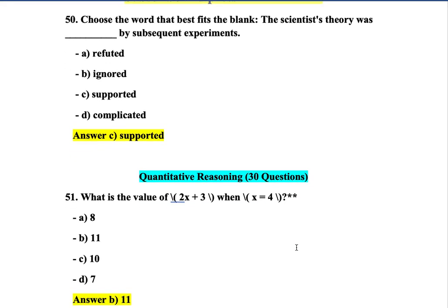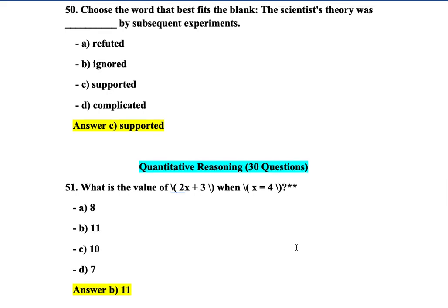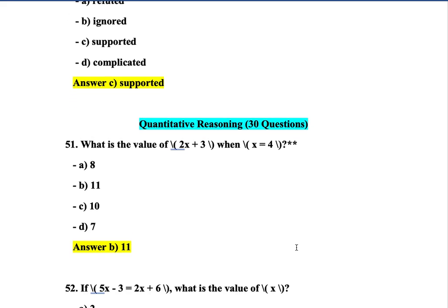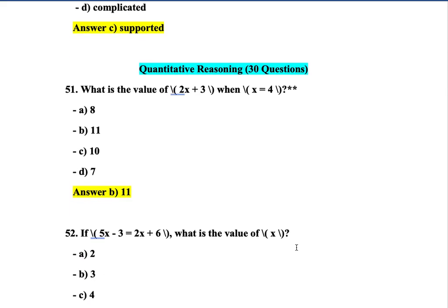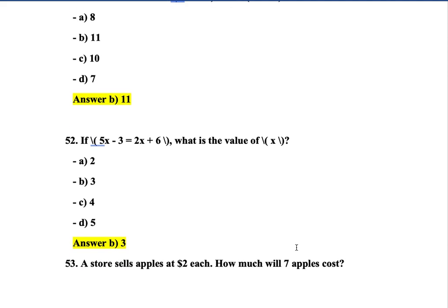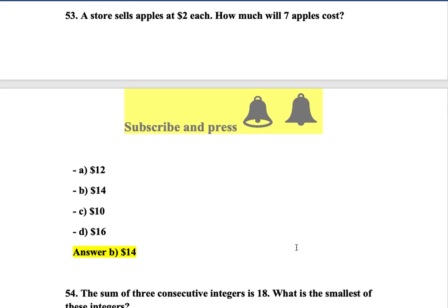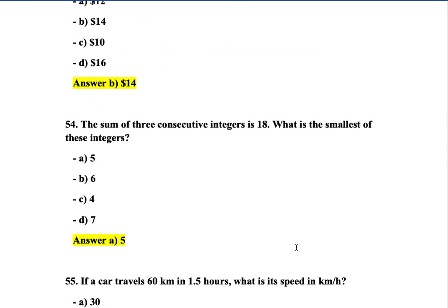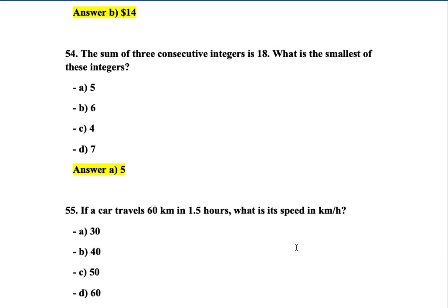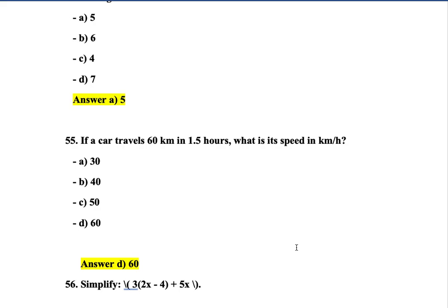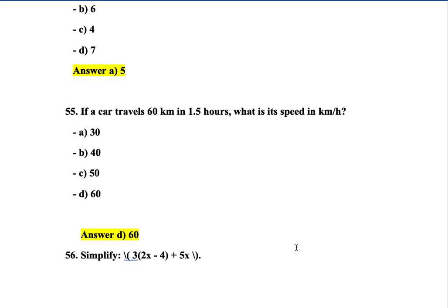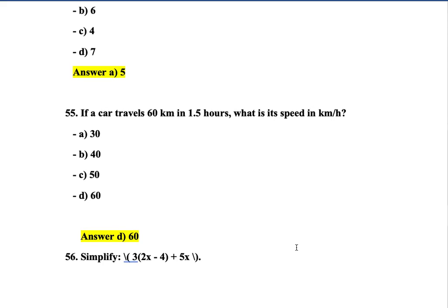Now the second section is quantitative reasoning — it has 30 questions starting from question number 51. Question 51: What is the value of 2x + 3 when x = 4? The answer is 11 — option B. Question 52: The correct answer is 3. Question 53: A store sells apples at $2 each — the answer is $14. Question 54: The sum of three consecutive integers is 18 — the smallest number is 5 (5+6+7=18). Question 55: If a car travels 60 km in 1.5 hours, what is the speed in km/h? I think the answer is wrong — the correct answer should be 40 km/h.